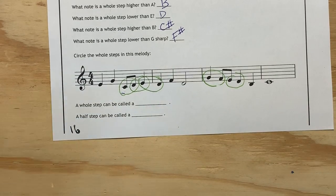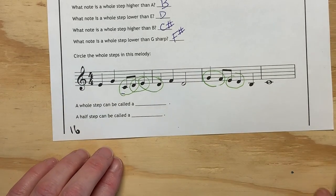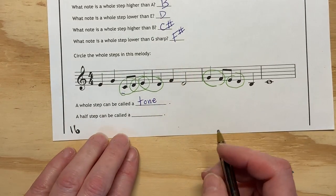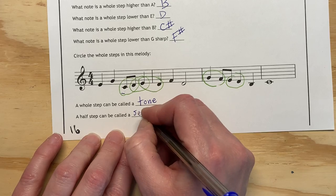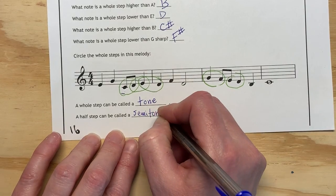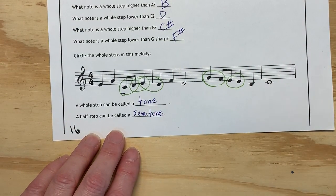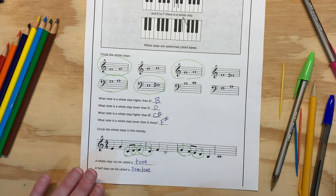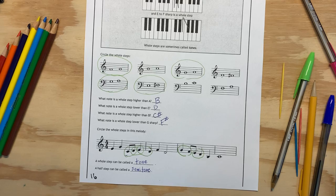A whole step can be called a tone. A half step can be called a semitone. That was from page 15. There we've got some whole steps all within page 16. Very challenging.